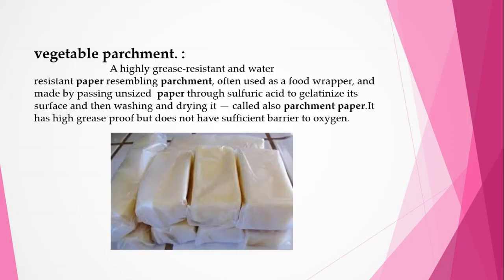Another packaging material for dairy products is vegetable parchment paper. It possesses high grease and water resistance and resembles traditional parchment, often used as a food wrapper. It is prepared by treating unsized paper with sulphuric acid so that the surface gets gelatinized, then washed and dried. This paper has high resistance to grease; however, its drawback is that it does not possess good barrier properties to oxygen.